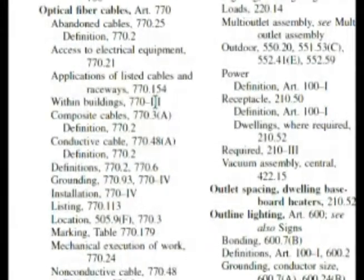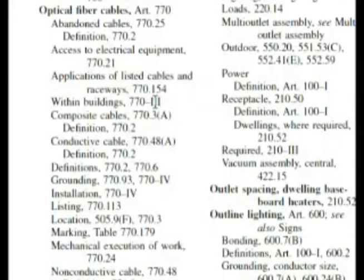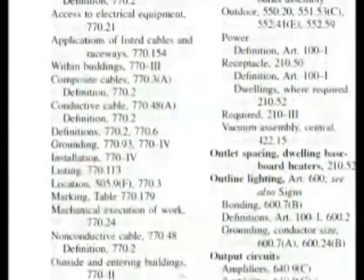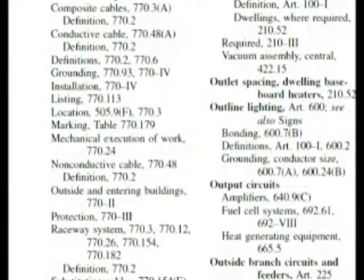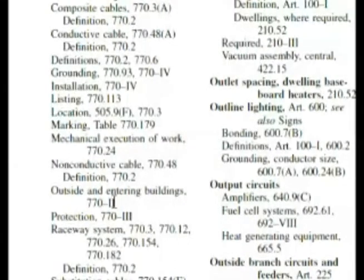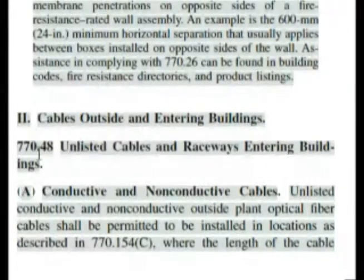However, our question asks when it enters the building, and it wants the length of the cable within the building, but it also talks about when it does enter the building. So let's see if we can find something else that could apply to our situation here. We're going to scroll down a little bit. Outside and entering the buildings — this is 770 Roman numeral II. We can start there because the fiber optic cable starts outside the building and enters it. And if we don't find what we want in Roman numeral II, then we'll go to Roman numeral III.